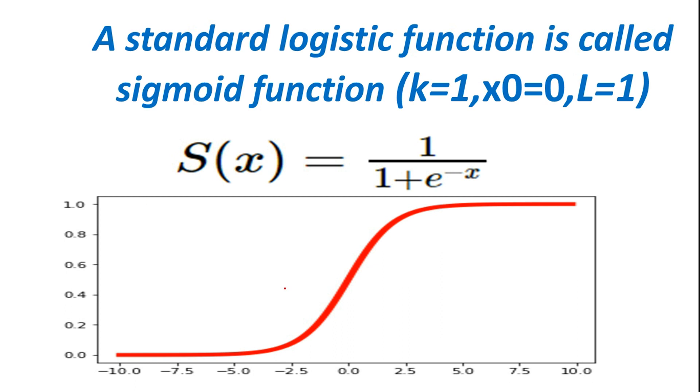So the logistic function gives an S-shaped curve. We can see that the curve resembles the letter S. This curve has a finite limit of 0 as x approaches minus infinity and plus 1 as x approaches plus infinity.